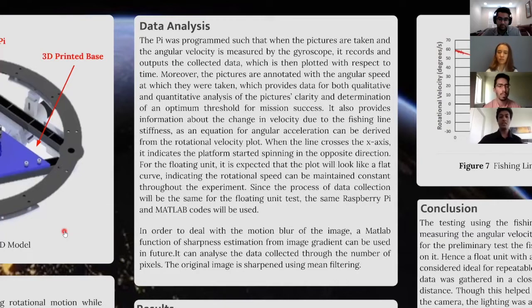In order to deal with the motion blur caused due to rapid motion, a MATLAB function of sharpness estimation from image gradient can be used. The function measures the sharpness of the original image and then uses mean filtering to sharpen the image from the data collected through number of pixels. However, this function has not been used yet, but we will be using it in the future.